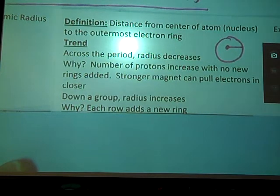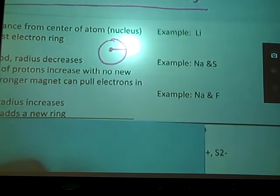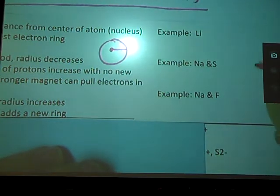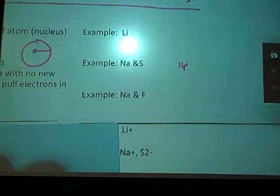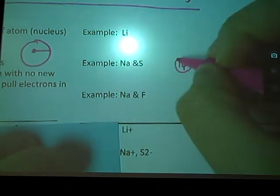For example, if we look at something like sodium and sulfur here. If we look at sodium on the periodic table, the periodic table tells me that he has 11 protons in his nucleus.